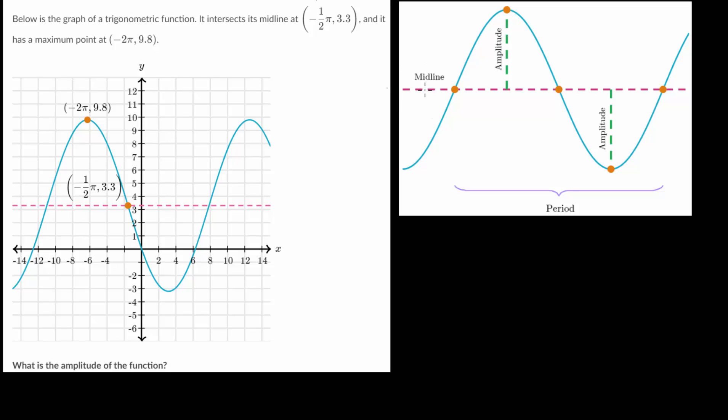We can see that the midline is the horizontal line that splits the sinusoidal function in half, where the amplitude is the distance from the midline to the maximum point, or it's the distance from the midline to the minimum point.